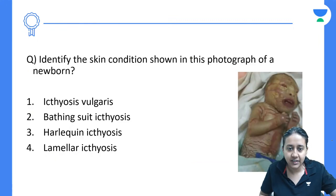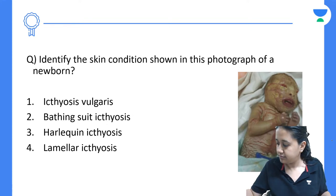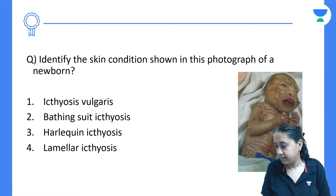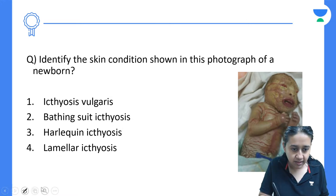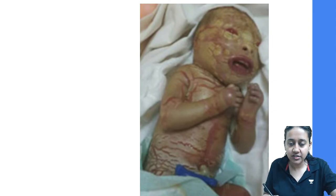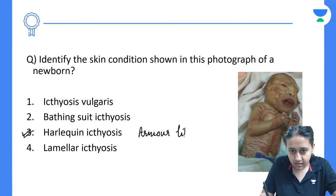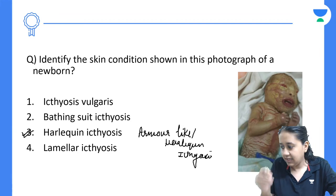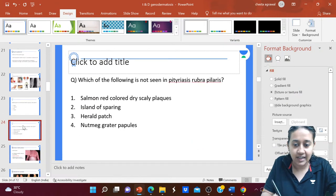Next question: identify the skin condition shown in the photograph. This baby has very thick scales that deform the shape of the baby. This is a classic armor-like appearance — harlequin ichthyosis.